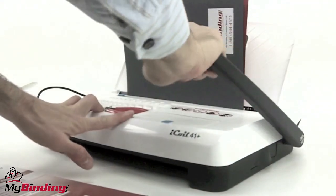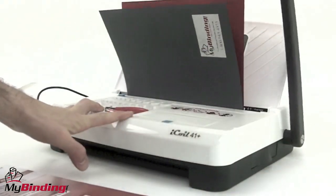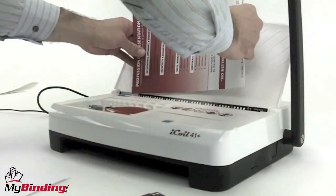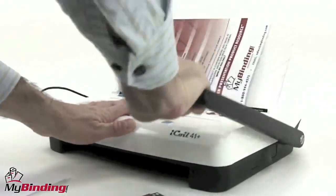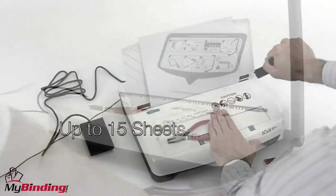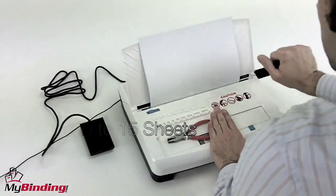With your papers in the throat and against the side margin control stop, make your punch. After your covers are done, continue to process through the rest of the papers in your project, punching holes. Up to 15 sheets of 20-pound paper per lift.